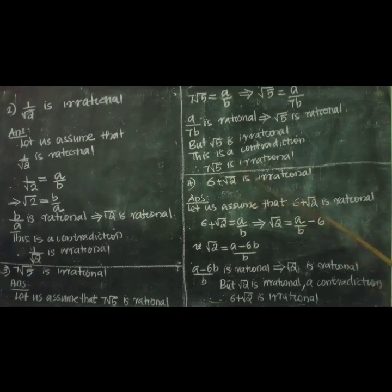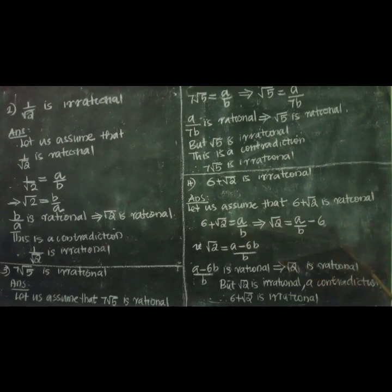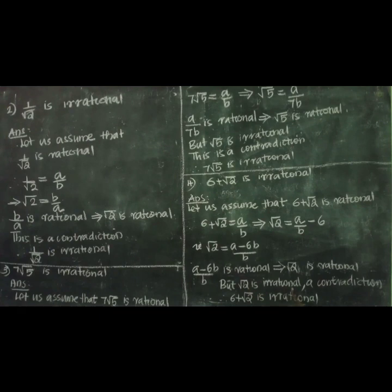Next question: prove that 6 plus root 2 is irrational. Let us assume that 6 plus root 2 is rational. Therefore, 6 plus root 2 equal to a by b, which implies root 2 equal to a by b minus 6. Cross multiplying the right side, we get root 2 equal to a minus 6b by b. Since a minus 6b by b is a rational number, root 2 is rational — but root 2 is irrational. That is a contradiction. Therefore, 6 plus root 2 is irrational.